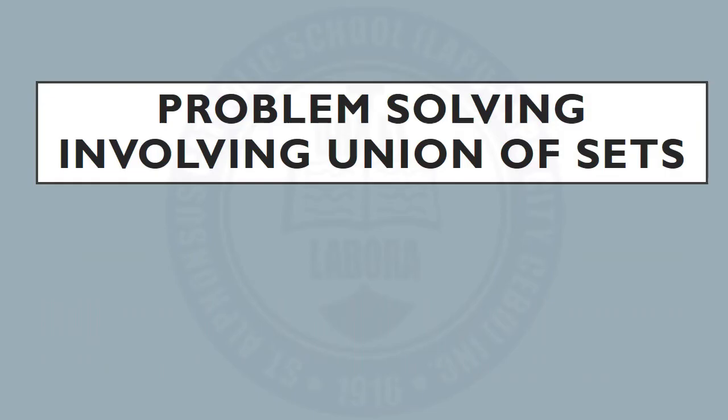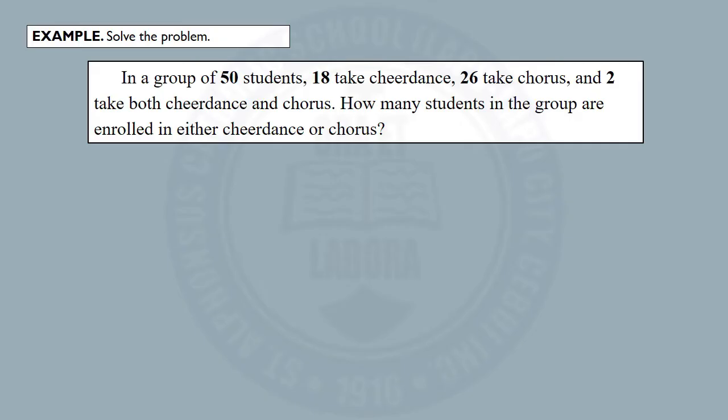Let's discuss problem solving involving union of sets. Example — solve the problem: In a group of 50 students, 18 take cheer dance, 26 take chorus, and 2 take both cheer dance and chorus. How many students in the group are enrolled in either cheer dance or chorus? To solve this problem, let's follow the steps.